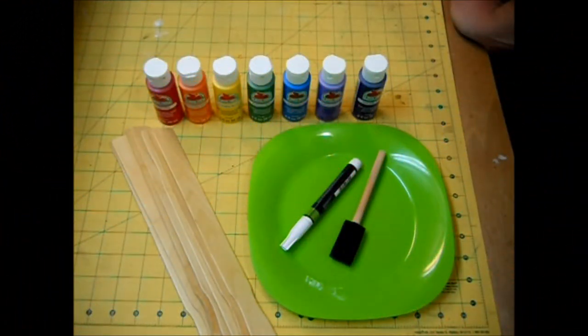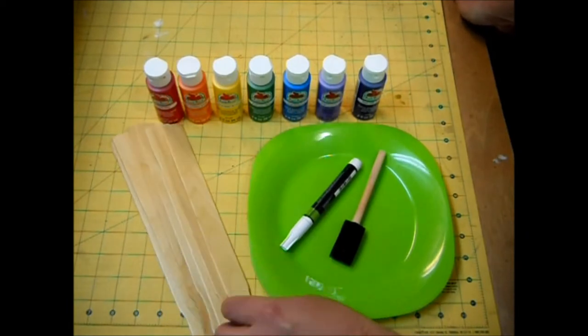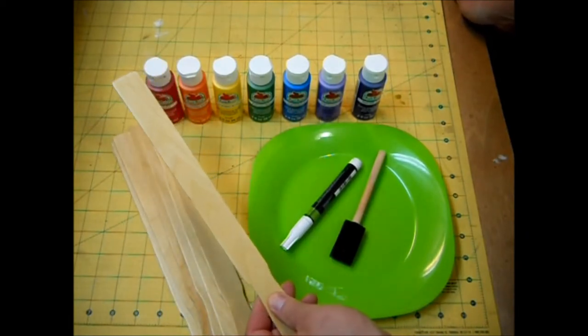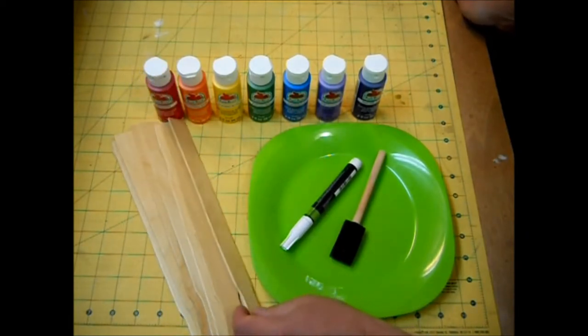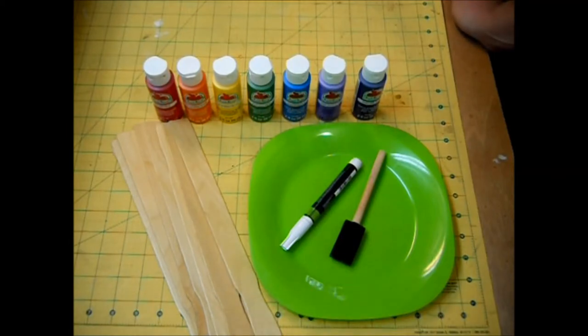What's up YouTube, today I'm going to show you how I'm going to do my garden markers this year. The things that you're going to need to do these garden markers are paint sticks. Now I got these paint sticks off of Amazon and I got a box of a hundred for about 20 bucks.